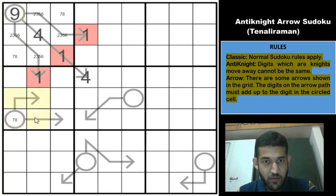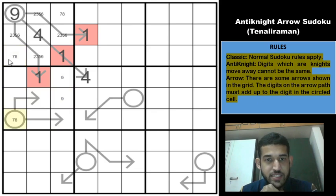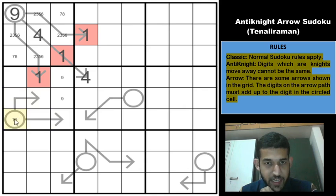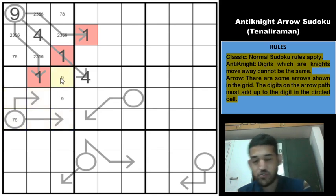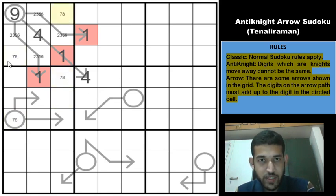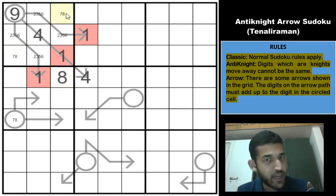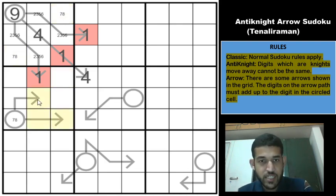Nine is in column 1 and cannot be in any arrow sum cells, so 9 must go in specific remaining cells. We have a 7-8 pair elsewhere, so 7 and 8 are eliminated from the arrow cells. Because of the knight's restriction, 7 and 8 also cannot appear in certain positions in box 4. Four cells in that region cannot be 7 or 8, creating a 7-8 pack in box 4. One remaining cell must therefore be 7 or 8, leaving only one cell for 9 in that box.